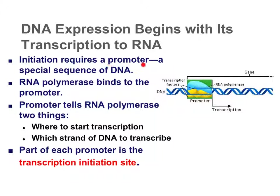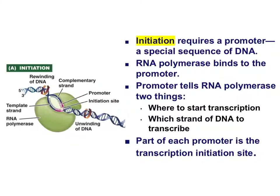The process begins with what's called a promoter — a specific sequence of DNA to which the RNA polymerase binds. Since the RNA polymerase catalyzes the building of the RNA sequence, binding to the promoter tells us where to start the whole process. Because DNA is double-stranded, it also tells us which strand becomes the template strand. So the transcription initiation site is at the promoter.